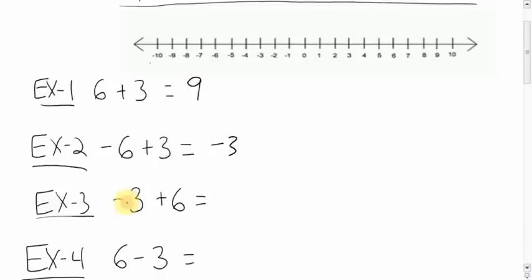Alright. Negative 3 plus 6 with the number line. You start at negative 3 and you move 6 spots. 1, 2, 3, 4, 5, 6. The answer is positive 3.